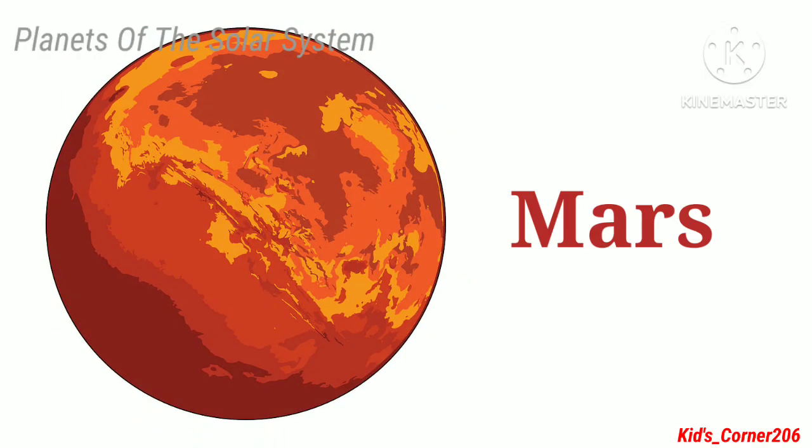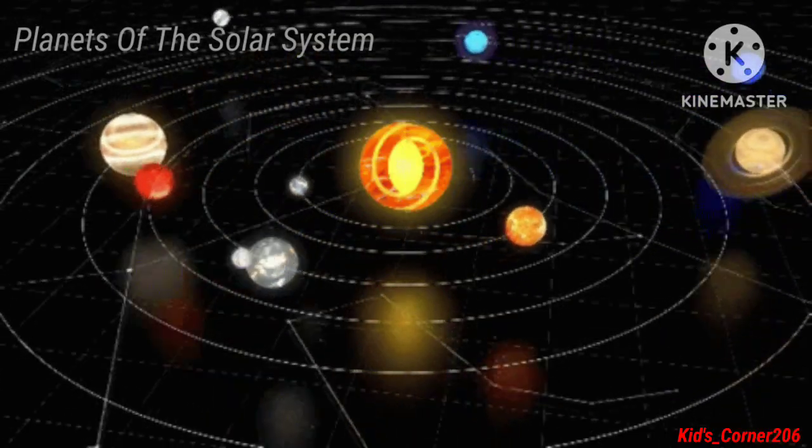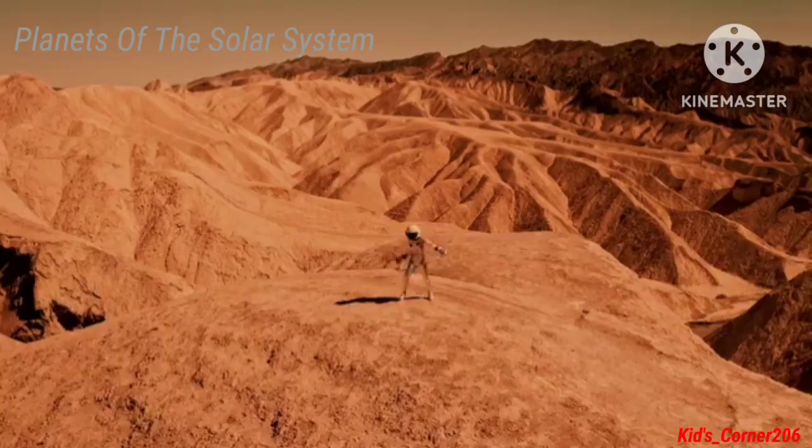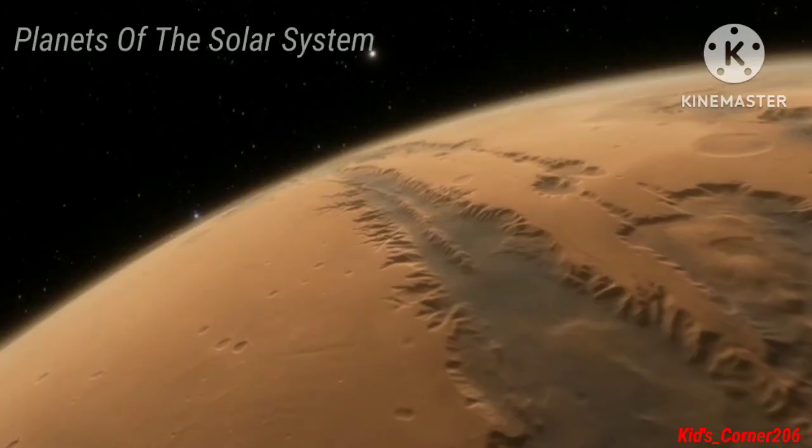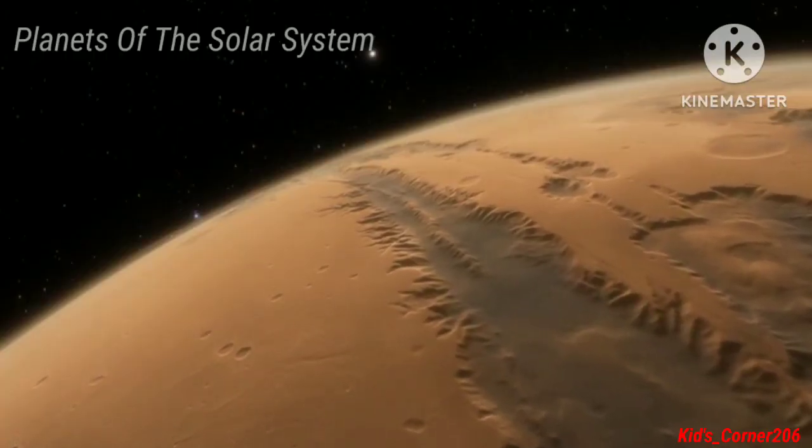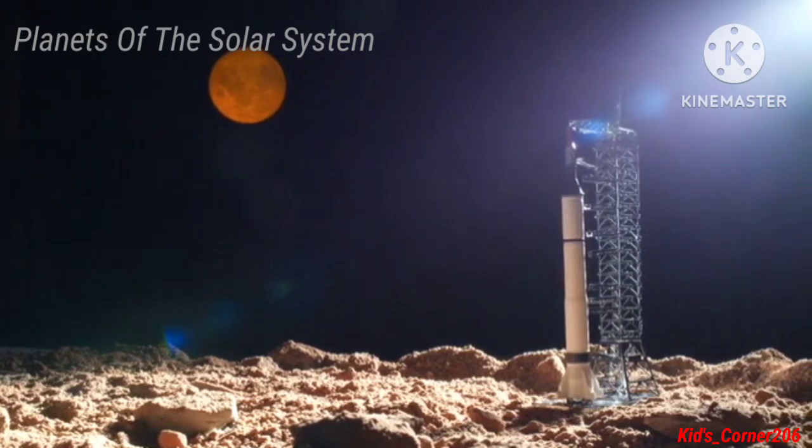The fourth planet in the solar system is Mars. Mars is made up of iron, that's why it's known as the red planet because of the presence of the red soil and rocks.